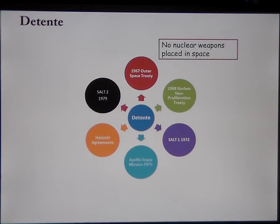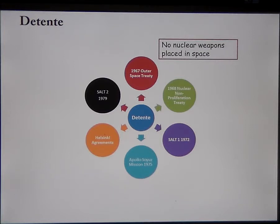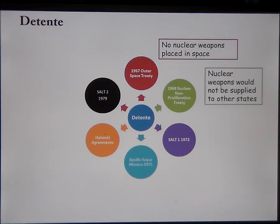The Outer Space Treaty said that no nuclear weapons could be placed in space, making space a safe zone for exploration. It removed the fear that satellites or the mission of getting man on the moon would be used for nuclear or arms race purposes. The Nuclear Non-Proliferation Treaty tried to limit nuclear information being passed on to other countries.